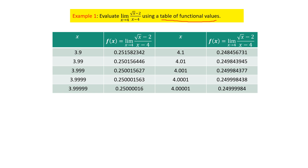Since the values are approaching very close to 4 from the left side, we begin with 3.9. By substituting 3.9 into the function we get a value, then 3.99, 3.999, 3.9999, and so on. For the right-hand limit we take values close to 4 from the right side, beginning with 4.1. Substituting 4.1 gives 0.248456731. Similarly substituting 4.01, 4.001, and further values gives the remaining column entries.